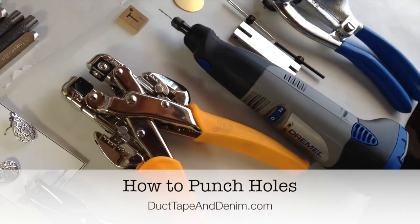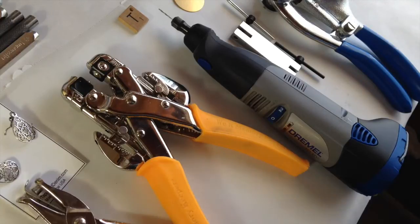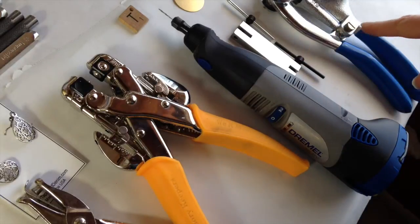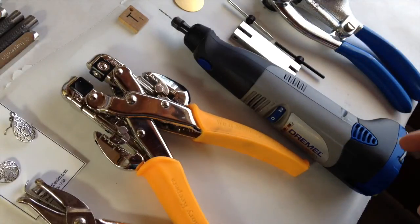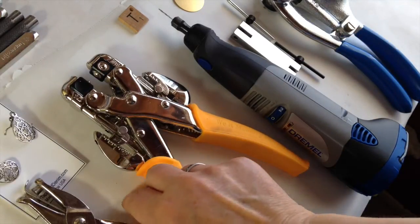Hi, this is Ann from Duct Tape & Denim. Today I've been making some short videos to answer questions that I get asked a lot. This video is about the question: how do you punch holes in different materials, especially in metal? So I thought I'd pull out all the different tools that I use to punch holes in different materials and just let you know how I use them.